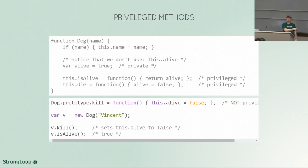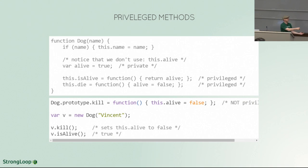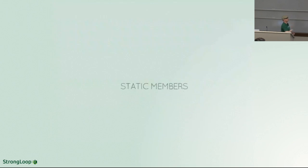If I were to create a kill function on the prototype — which is public, not privileged, not inside the constructor — and set this.alive to false, then when I kill the dog and check isAlive, isAlive is still true. Why? Because I'm not accessing the same variable. This.alive is a completely different variable — yes, they happen to have the same name, but they are completely different variables in different contexts.